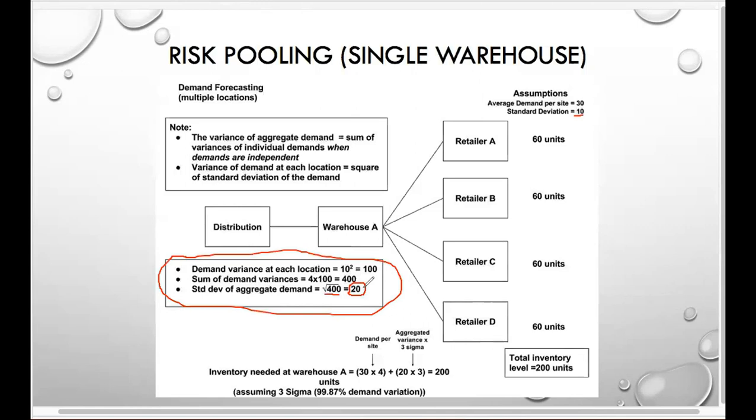So now the aggregated variance, the inventory that was needed at the warehouse is still the 30 times 4, because we've got 4 retailers and 30 each. But now we're going to aggregate the variance. So the variance goes from 10 across all these sites to 20 aggregated here. So warehouse A has to basically absorb 20 units worth of variation across all four retailers. And we multiply that by 3 sigma, which is our management-mandated level of demand variation, which when we take all this, gives us 200 units. So by aggregating all the demand across four sites, we're able to reduce inventory by 40 units.